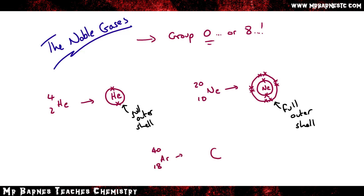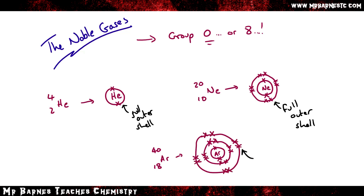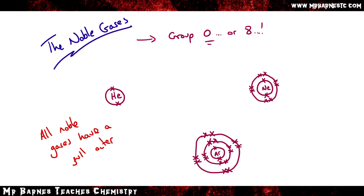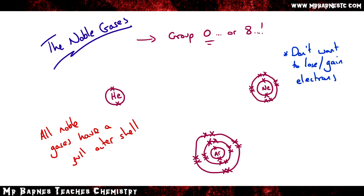And as you can see with argon, which has 18 electrons — two in the first shell, eight in the second, eight in the third — all of the noble gases have full outer shells. What this means is they don't want to lose or gain electrons, and if they don't lose or gain electrons it makes them unreactive. They're stable.